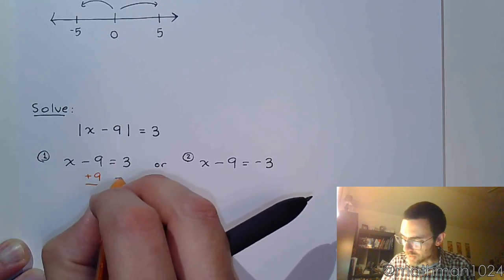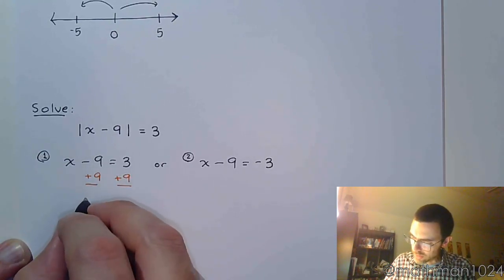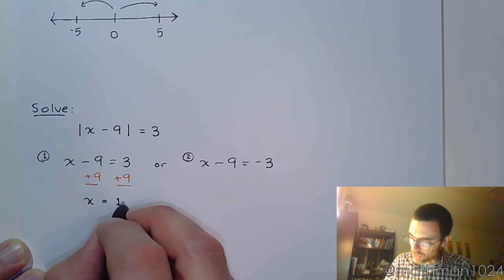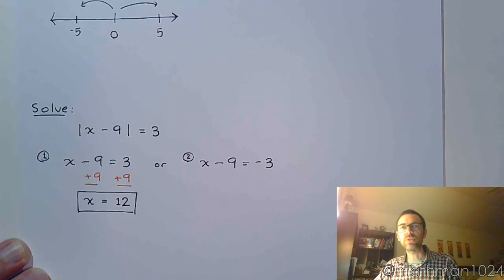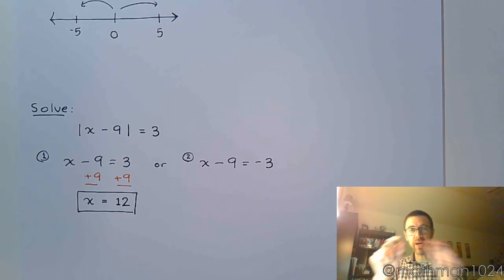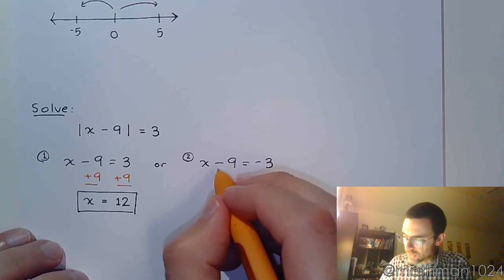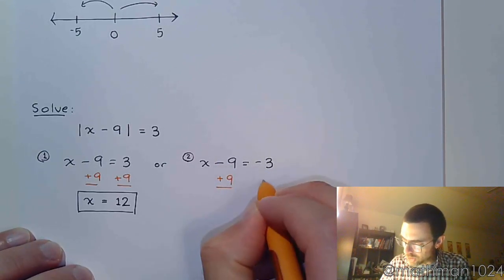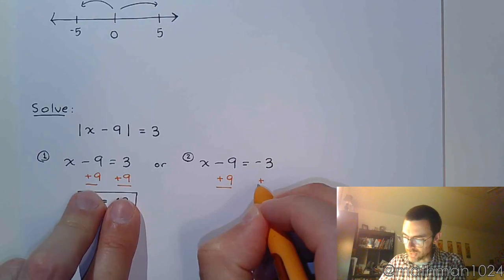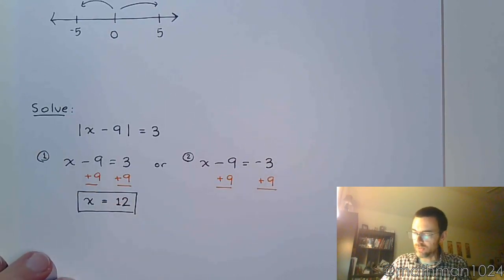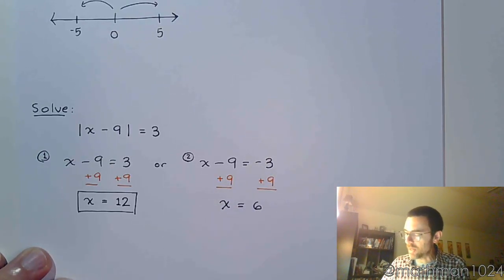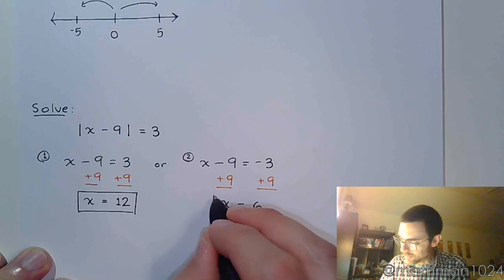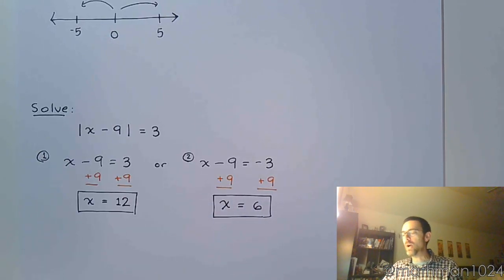So we add 9 to both sides, and we have x is equal to 12. What you're going to notice is that when you solve these absolute value equations and you break them down into the two pieces, the steps you take to solve will be the same for both equations. So just like I added 9 on both sides here, I'm going to add 9 on both sides over here. So x is equal to positive 6.